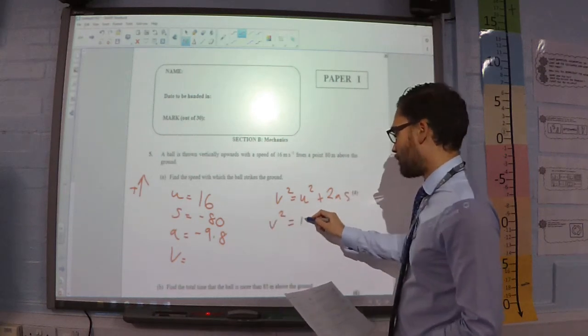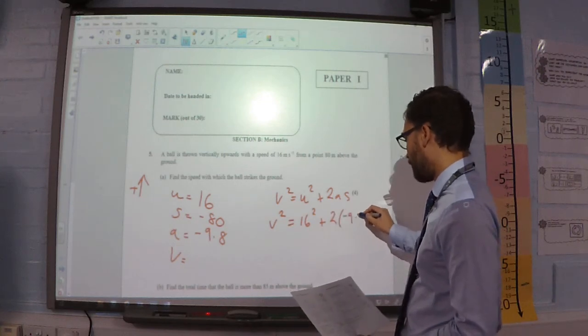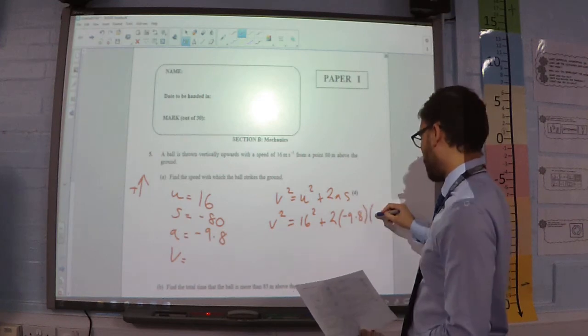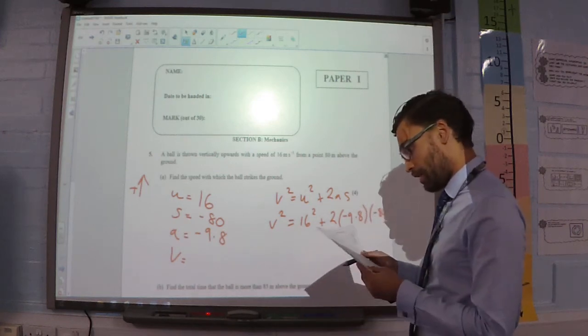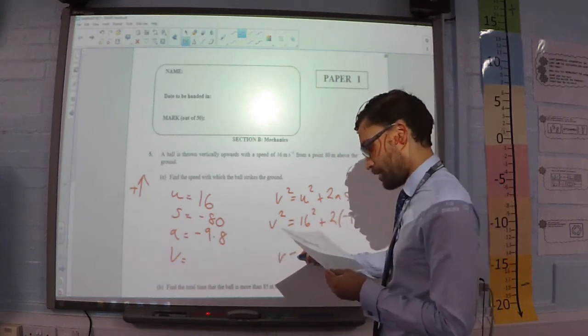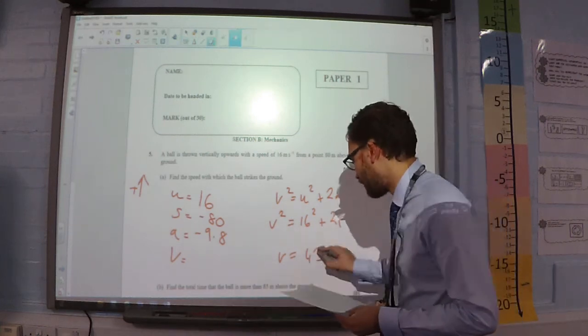So, v squared is equal to 16 squared plus 2 times by negative 9.8 times by negative 80. And if I substitute that in and square root it, you'll eventually get that v is equal to 42.7 meters per second.